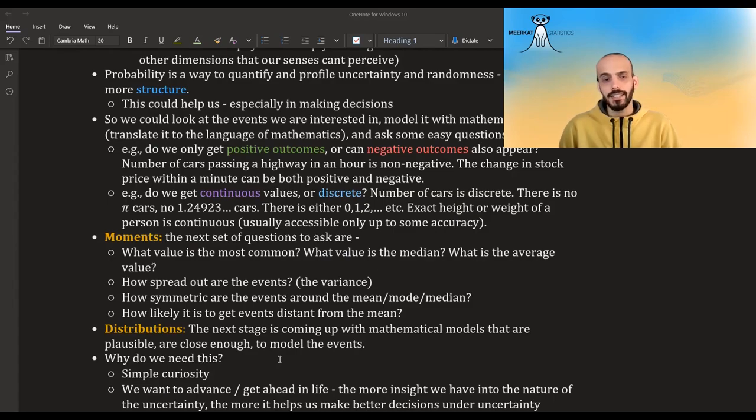The next set of questions we could ask are regarding what is called the moments of this uncertainty. We can ask what is the most common value? And it's called the mode, right? And what is the average? What is the mean value? And how are they different? Are they the same? Is the mean larger than the mode? Is it smaller than the mode? What is the median? What is the value that 50% of the cases are less than and 50% of the cases are more than? How spread out are the events, which is called in statistics, the variance? How symmetric are the events? How likely is it to get distant events, events that are distant from the mean? How likely are they? Are they very, very rare? Or are they not so rare?